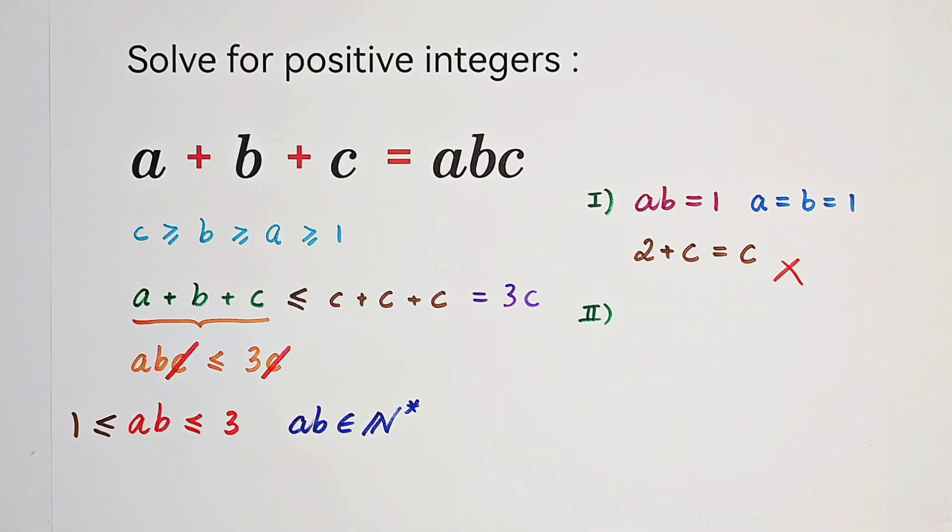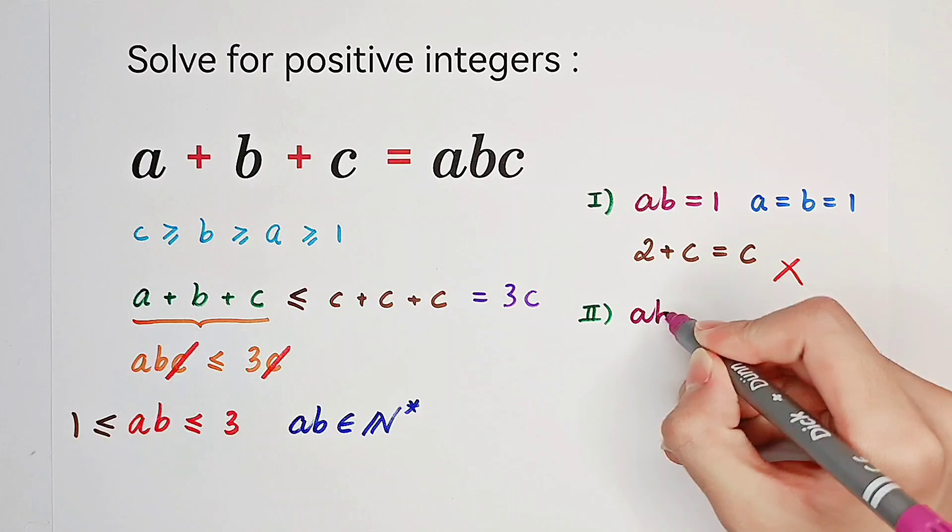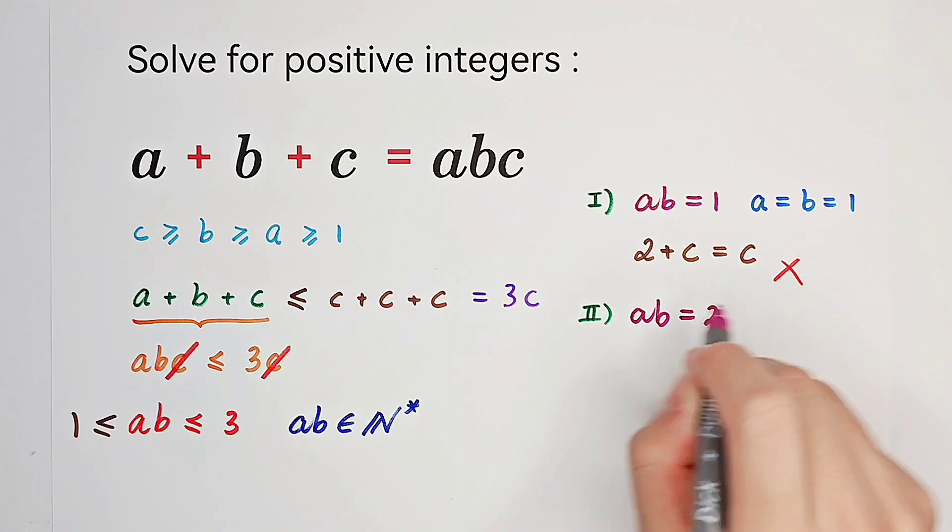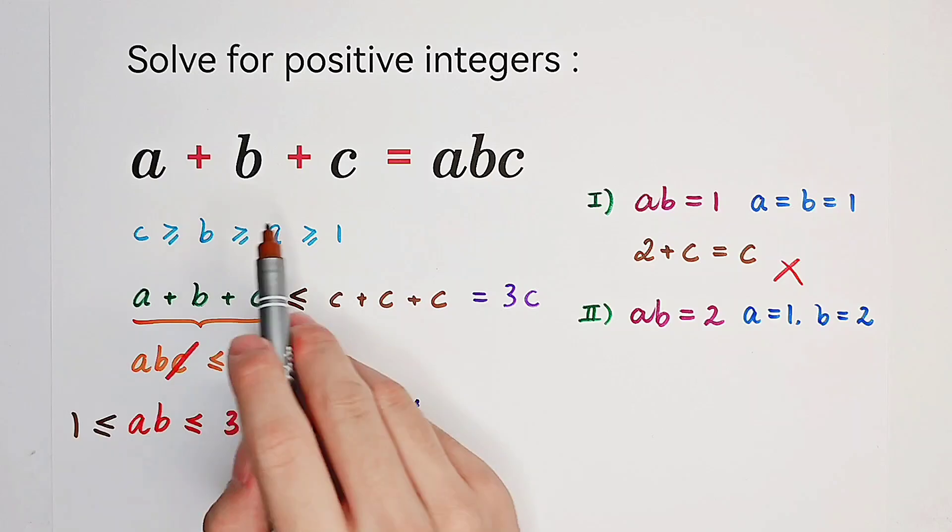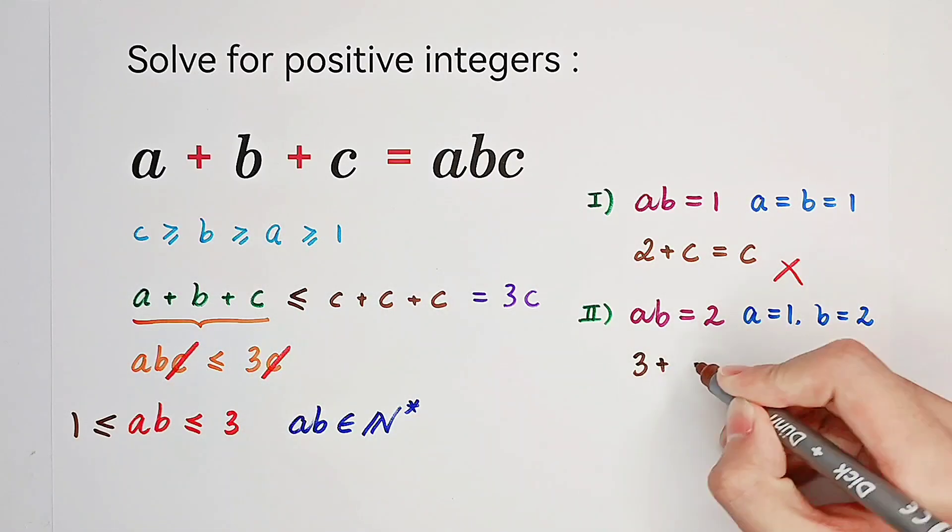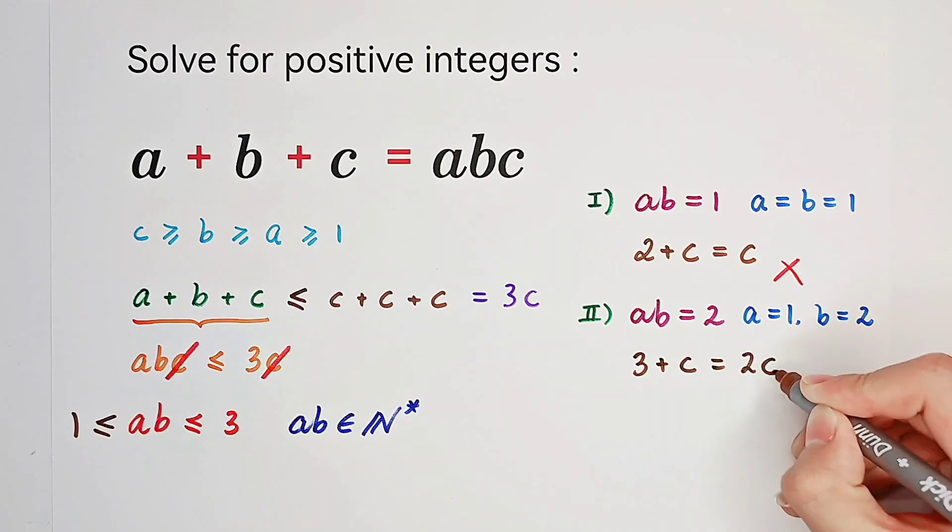In our second case, if A times B is 2. Since we have A is less than or equal to B, however, 2 can only be written as 1 times 2 or 2 times 1, because it's prime. And A is smaller than or equal to B, so that means A can only be 1 and B is 2. In this case, we have 1 plus 2 plus C equals 1 times 2 times C. 3 plus C equals 2C. Subtract C from both sides. C equals 3.